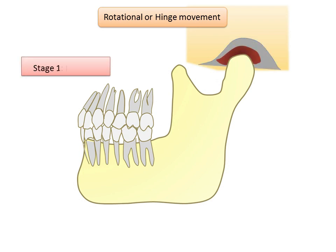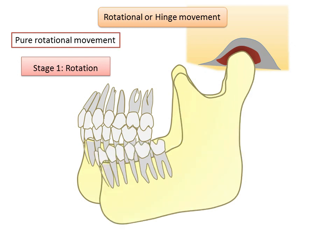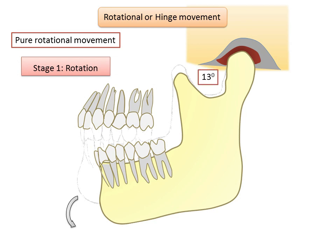The terminal hinge axis is when the condyles are in their most superior position in the articular fossae and the mouth is purely rotated open. The mandible can be lowered in a pure rotational movement without translation of condyles. McCollum proposed that the hinge movement occurs when there is a 10 to 13 degree rotation of the condyle in the temporomandibular joint.